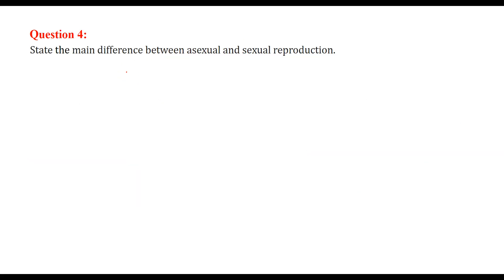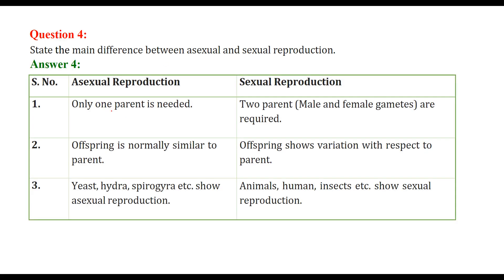The main differences between asexual and sexual reproduction: In asexual reproduction, only one parent is needed, whereas in sexual reproduction, two parents — both male and female — are required. The offspring in asexual reproduction are exactly similar to the parent, but in sexual reproduction the offspring may have some variation. Examples of asexual reproduction include yeast, hydra, and spirogyra. Sexual reproduction is shown by animals, humans, and insects.